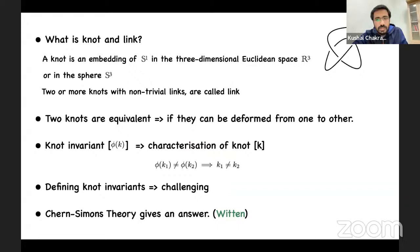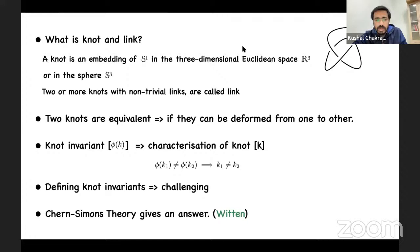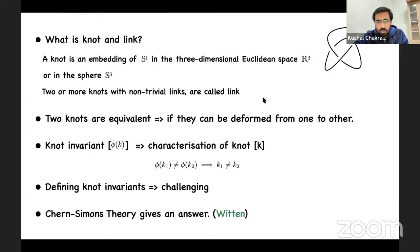Let's start with the definitions of what a knot and link are. A knot is basically an embedding of S1 into three-dimensional Euclidean space R3 or the three-sphere S3, but in general one can consider more complicated manifolds. A link is made up of several components of knots which do not intersect each other but can have some linking between them.